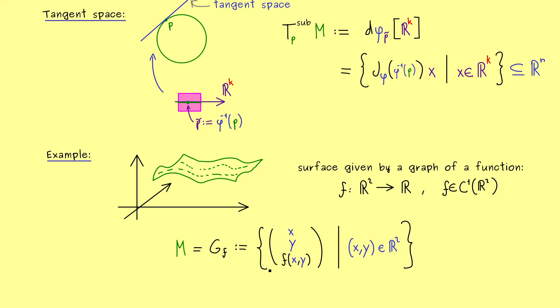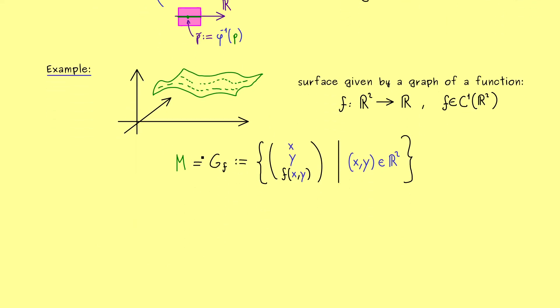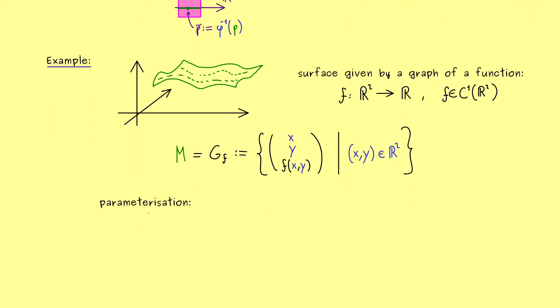Hence we also only need one parameterization to describe the whole manifold. In this case it is indeed a global parameterization. The map phi is defined on whole R^2 and maps into M. We already know it should send (x,y) to the point from the definition above.